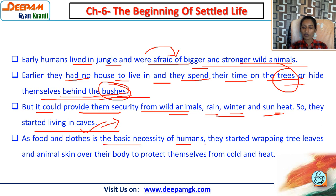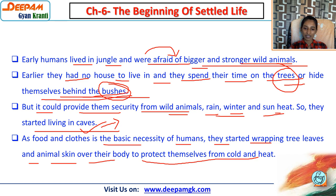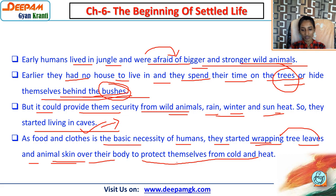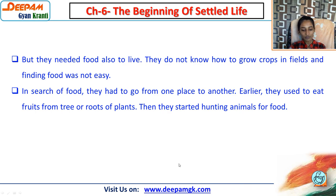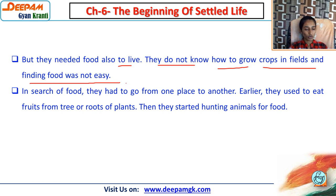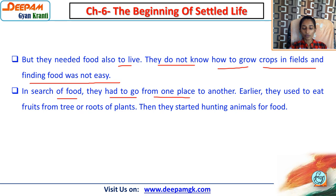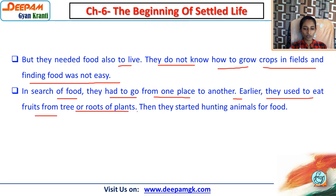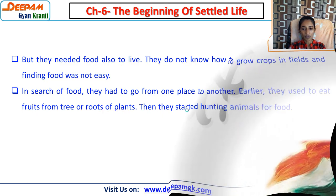As food and clothes are the basic necessities of humans, they started wrapping tree leaves and animal skin over their bodies to protect themselves from cold and heat. They did not know how to grow crops in fields, and finding food was not easy. They had to go from one place to another in search of food, eating fruits from trees and root plants, and then started hunting animals for food.